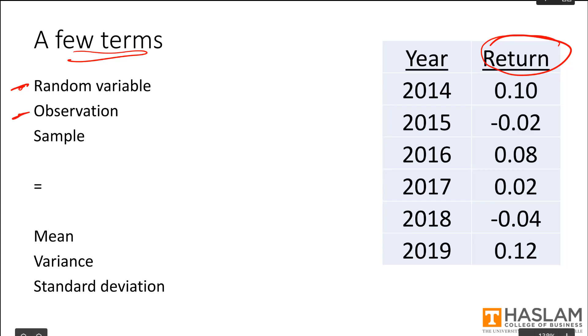Second, an observation. An observation is just a single outcome from one of these experiments, so we see a particular value that the random variable takes. An example of that is here. In the year 2017, a stock returned 2%. So that is a single observation for that stock return.